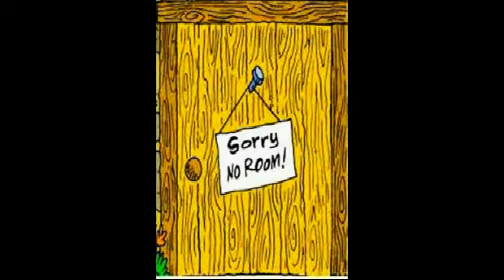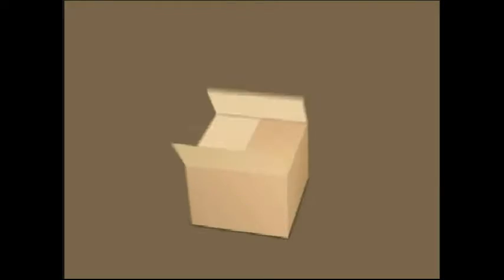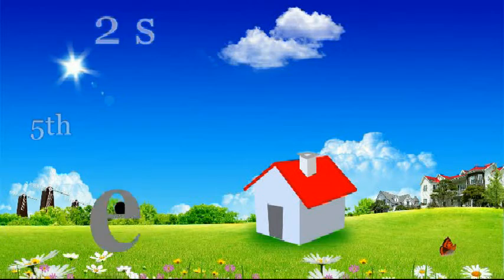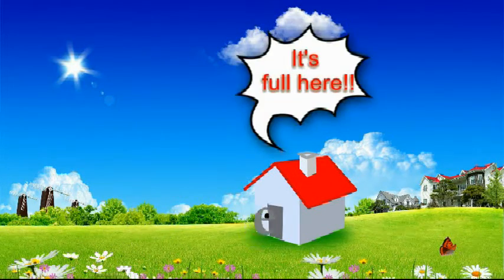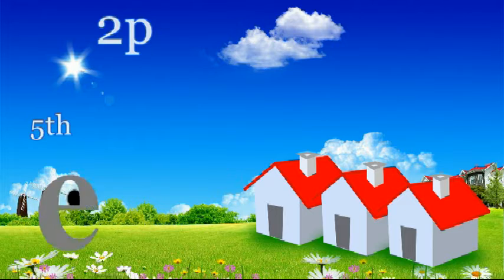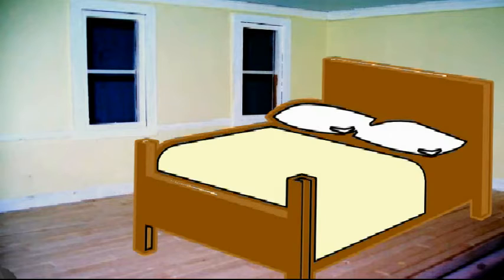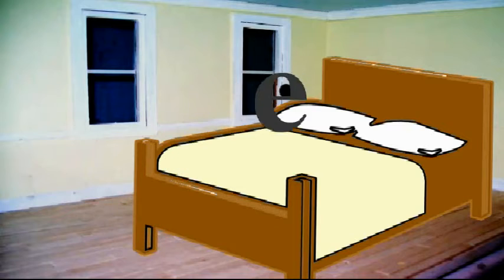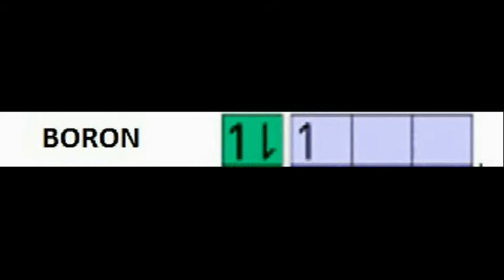Now as 2s is full, the owner opens the next hostel which has three rooms — now 2p. The fifth electron comes, finds 2s is full, and moves to 2p. It finds the first room empty and takes it — this is boron.